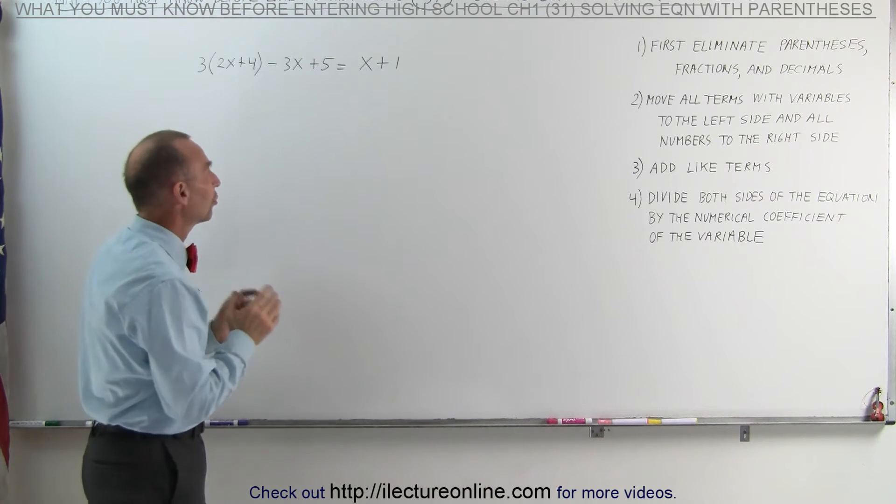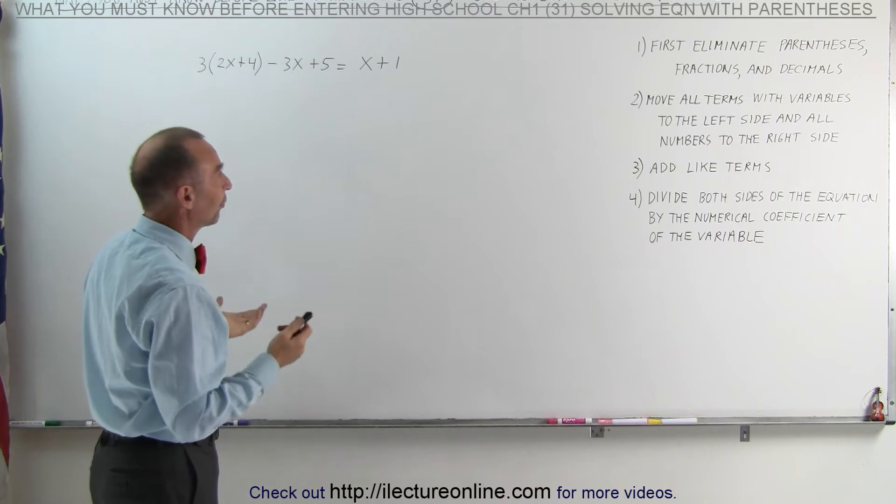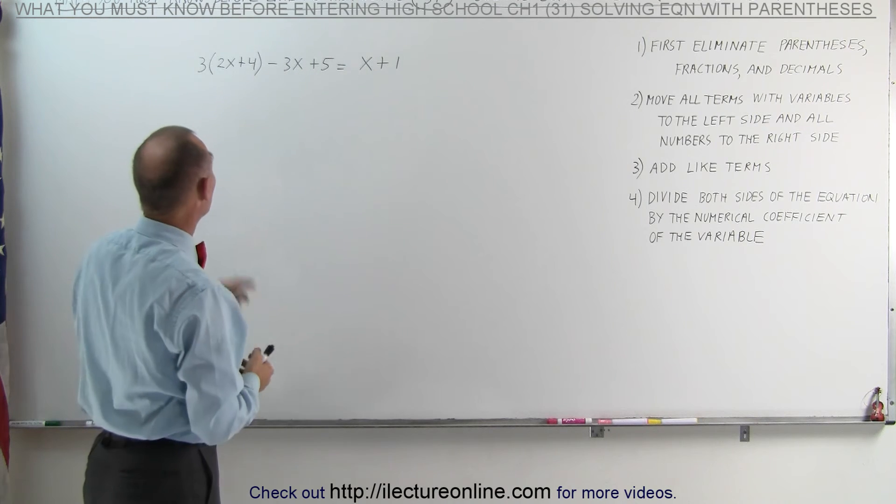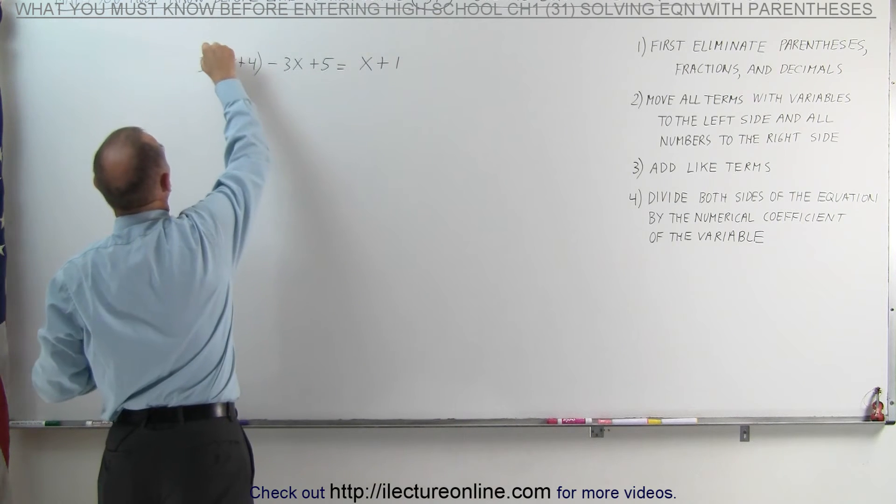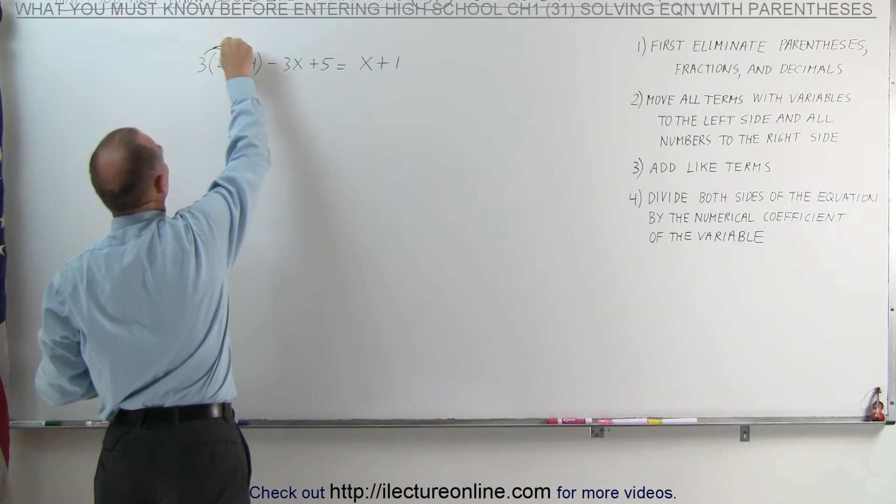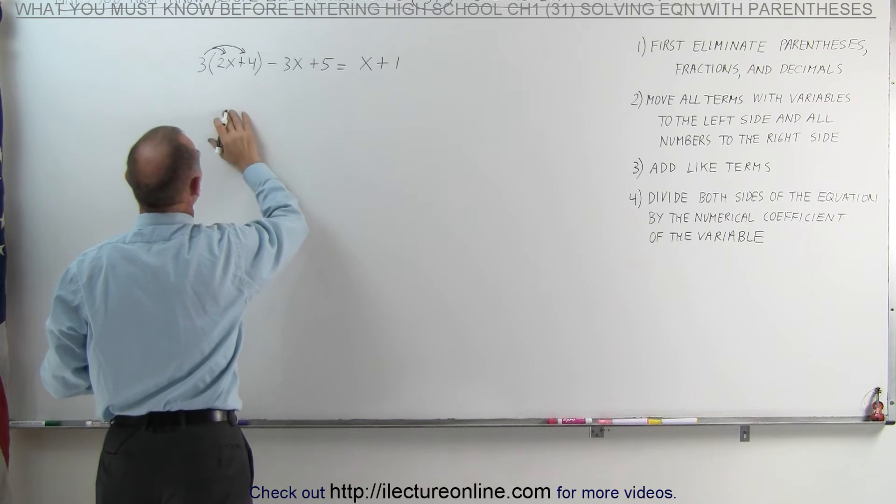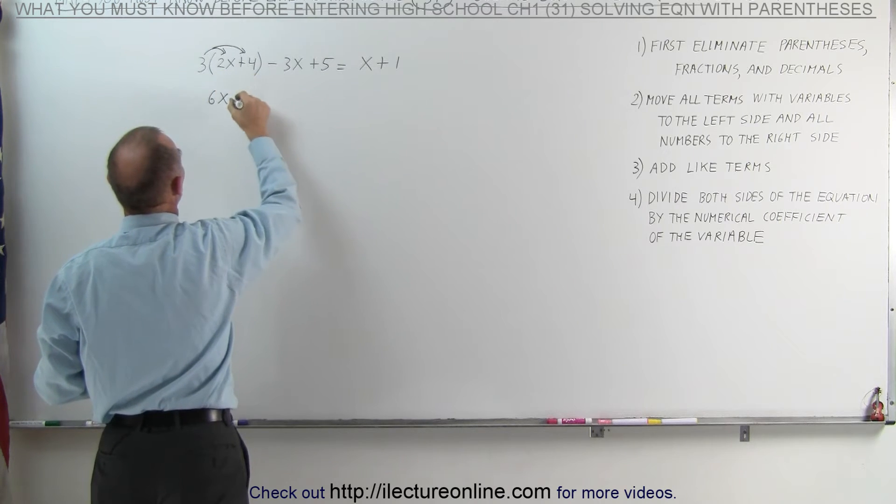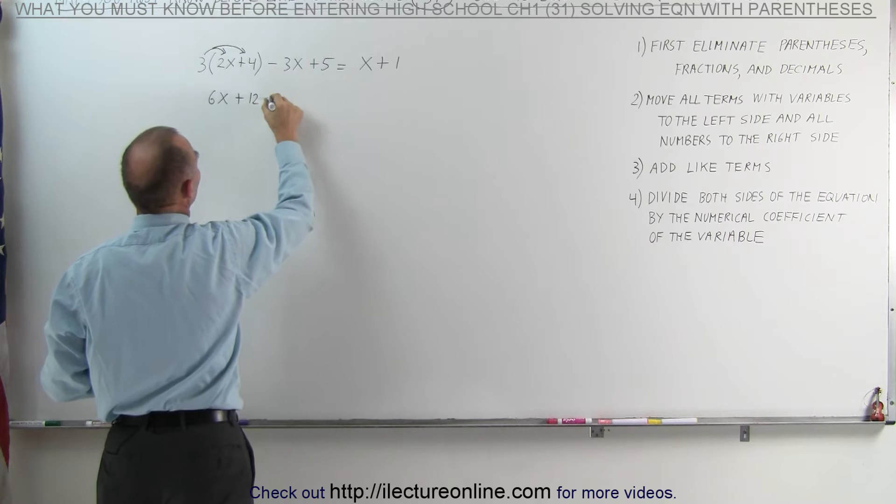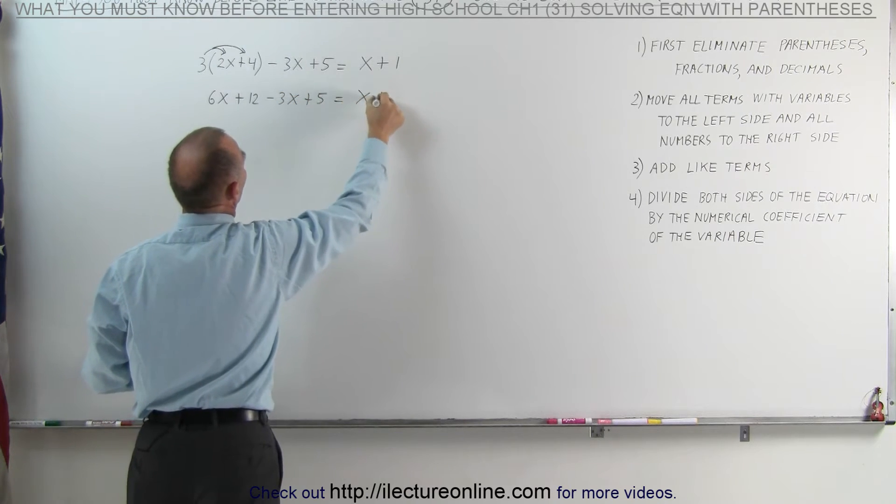Well, let's go ahead and solve this problem so you can see how we apply these four steps. First step, since there are fractions, we need to get rid of the fraction first. So we're going to multiply the 3 by the two terms inside the fraction. That's called distributing the 3 on the two terms. 3 times 2x is 6x. 3 times 4 is 12. We still have the minus 3x and the plus 5 equals x plus 1.